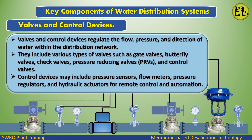Valves and control devices regulate the flow, pressure, and direction of water within the distribution network. They include various types of valves such as gate valves, butterfly valves, check valves, pressure reducing valves (PRVs), and control valves. Control devices may include pressure sensors, flow meters, pressure regulators, and hydraulic actuators for remote control and automation.